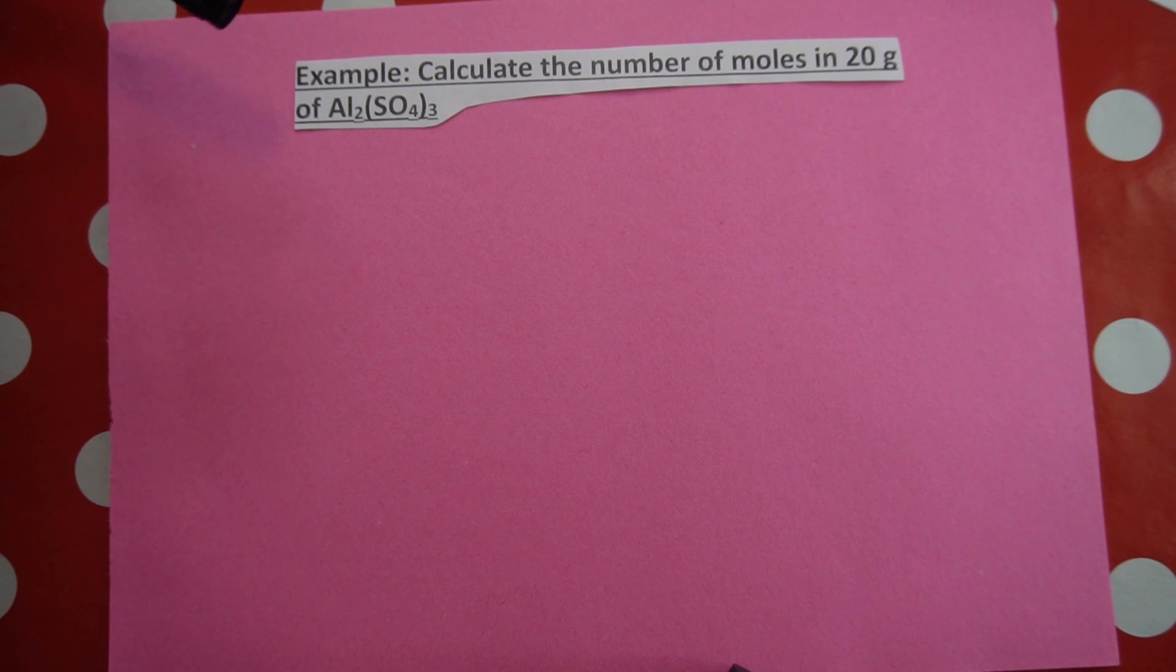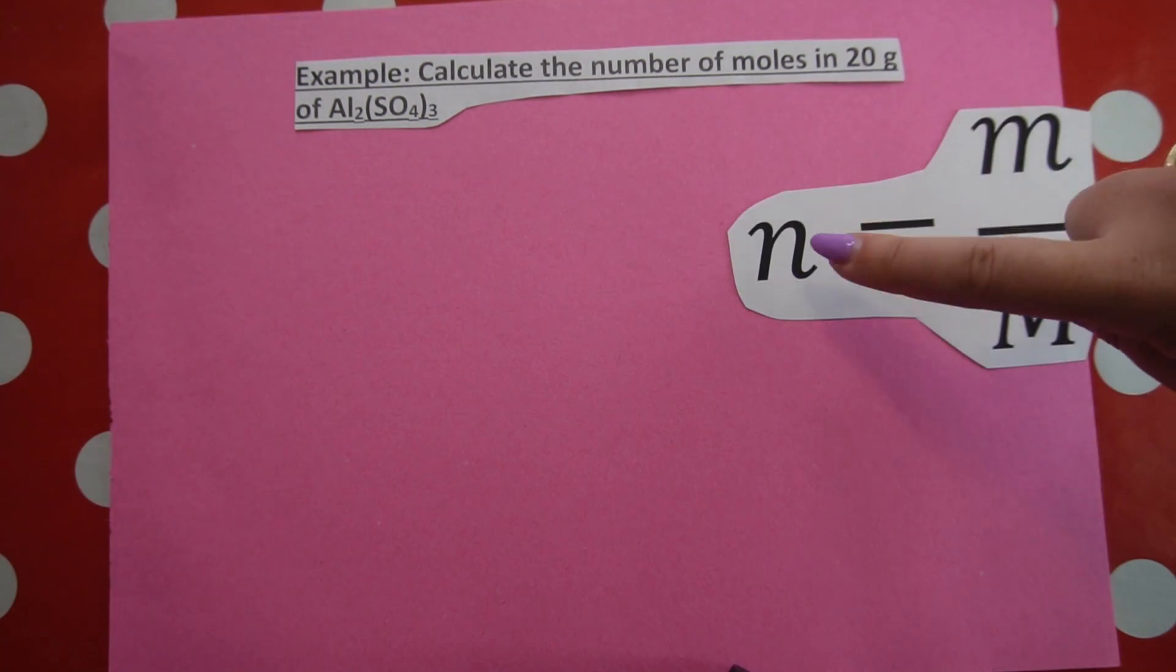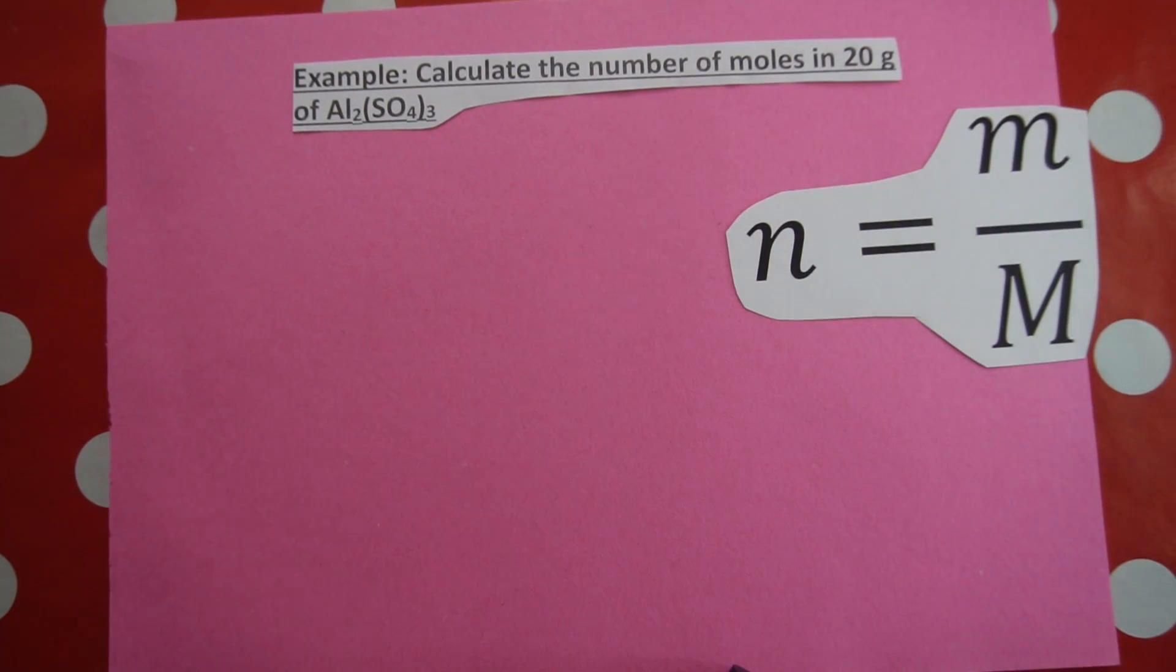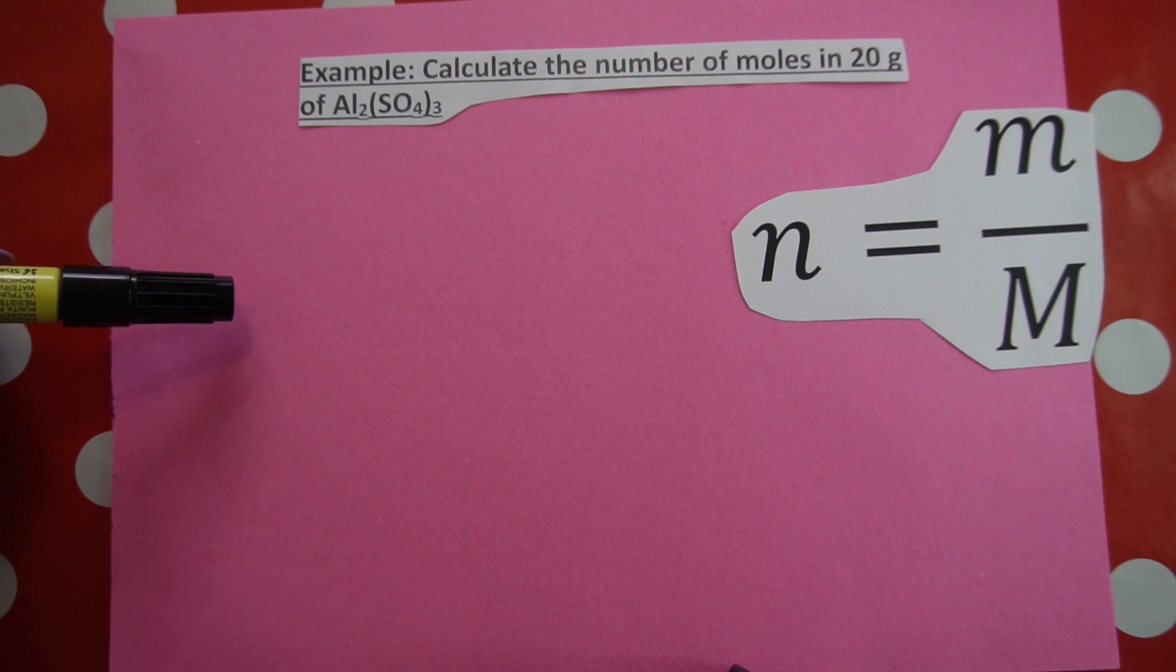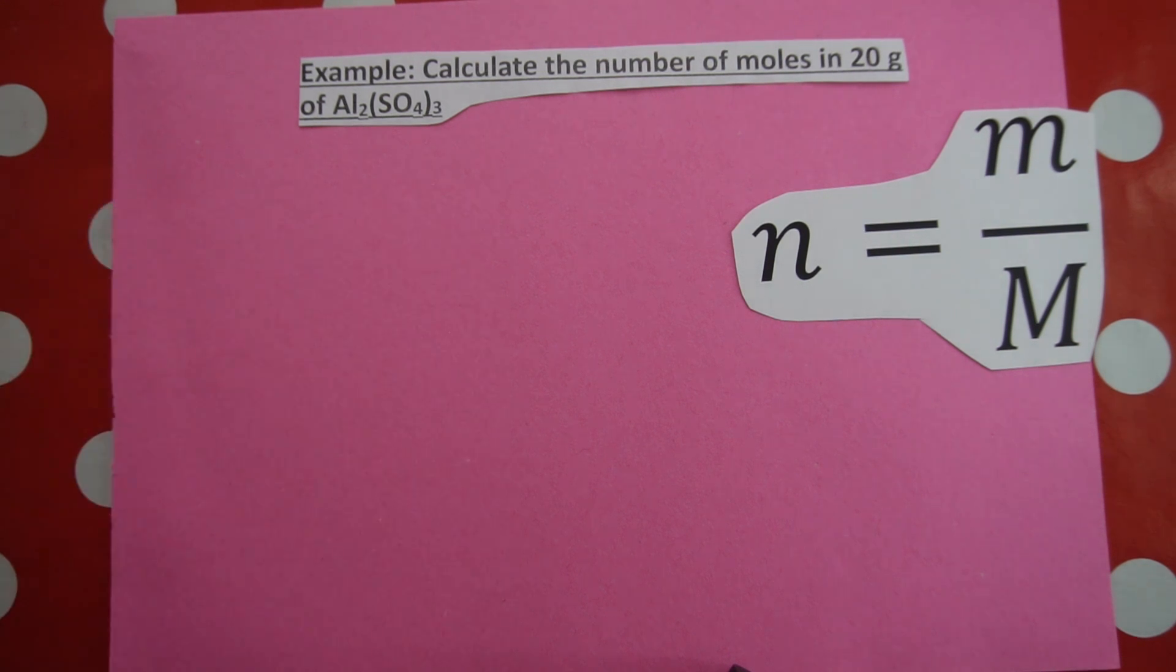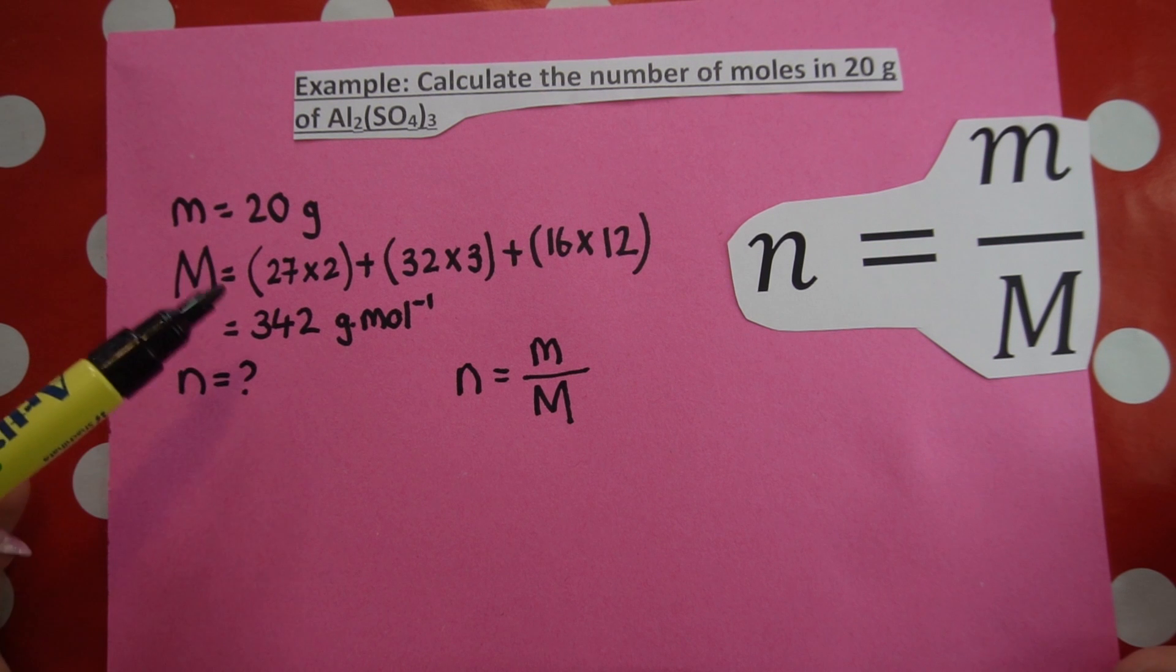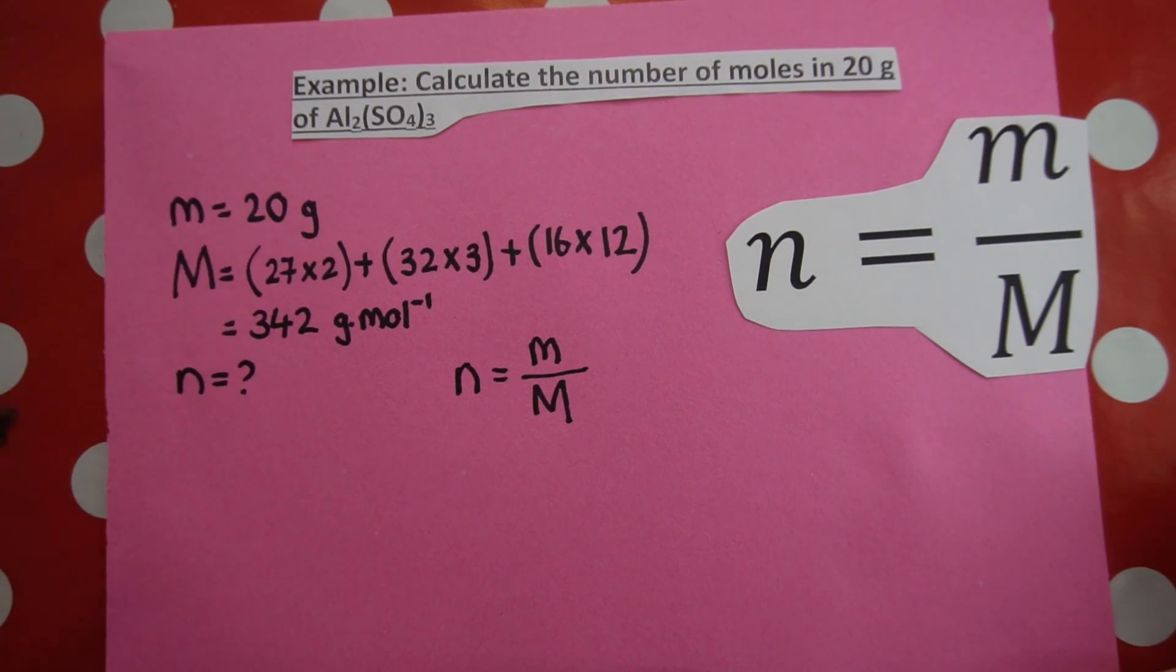In our second example, they're also asking for number of moles, so they're asking for N, number of moles. They give me the mass again, 20 grams. That is baby M. And they give me the compound, aluminum sulfate. Now that doesn't give us the molar mass immediately, but we know that we can work out the molar mass, big M, by using the periodic table. I'm going to list my variables, write my formula, and then I'll show you how we calculate it. So what I've done is I've listed my variables. I've calculated molar mass. If you need help with how to calculate molar mass, make sure to watch my video linked.